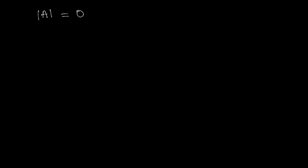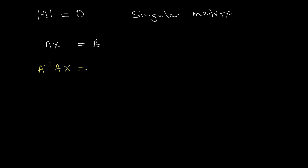When finding the determinant of a matrix, it cannot be zero, because a determinant of zero gives what we call a singular matrix, and you cannot divide by zero. To apply the inverse matrix to the equation ax equals b, you multiply both sides on the left by the inverse of a: inverse of a times a times x equals inverse of a times b.